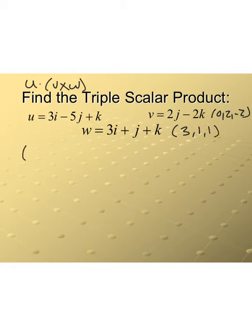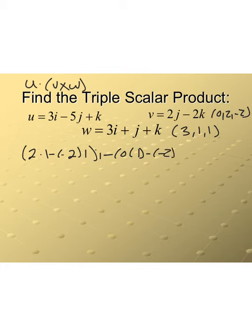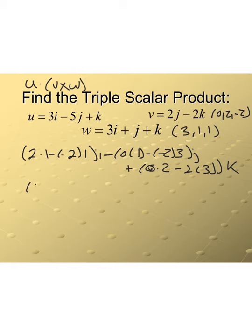Computing v × w: (2·1 − (−2)·1)i − (0·1 − (−2)·3)j + (0·1 − 2·3)k. Simplifying this gives us the vector 4i − 6j − 6k.